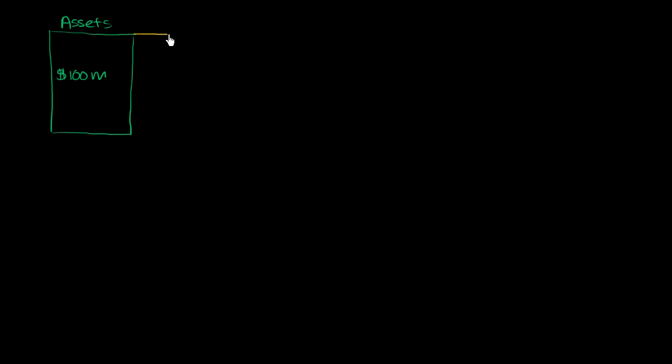So it has $100 million of assets and let's say it has some liabilities. Let's say that this company right over here has $60 million in liabilities. And I'm trying to do it roughly equal to the height. Liabilities are just obligations. So it owes people $60 million worth of stuff.